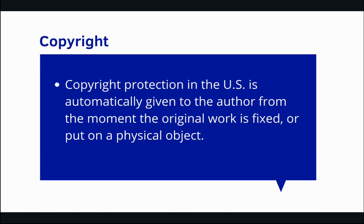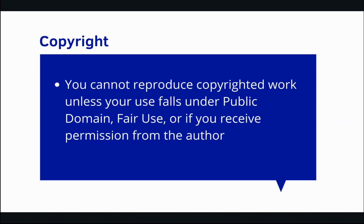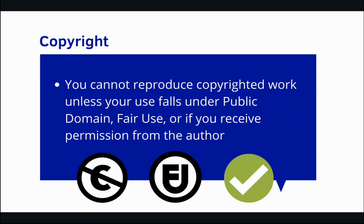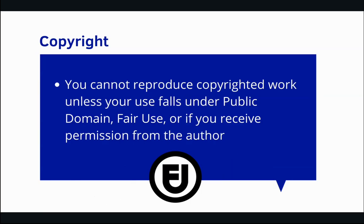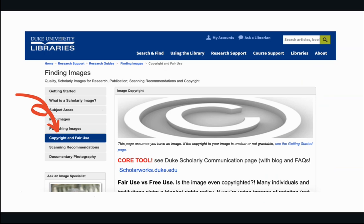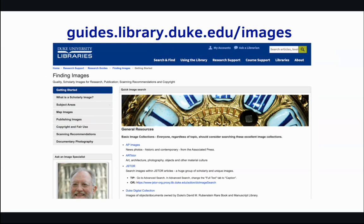Once you've assessed quality, context, and reliability, you'll want to consider how copyright restrictions affect your use of an image. Copyright protection in the US is automatically given to the author from the moment the original work is fixed or put on a physical object. You cannot reproduce copyrighted work unless your use falls under public domain, fair use, or if you receive permission from the author. Typically, when using images in your coursework, your image use falls under fair use. To learn more about copyright, including Creative Commons licenses, refer to the Copyright and Fair Use tab in the Finding Images Research Guide found at guides.library.duke.edu/images.